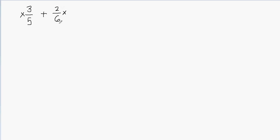Here I have this fraction 2 sixths. I will multiply it by the denominator of the other fraction. What is the denominator of that fraction? It's 5. That means I will multiply this by 5. Since I'm multiplying the denominator by 5, I will also have to multiply the numerator by 5 so that I'm not changing the value of the fraction.